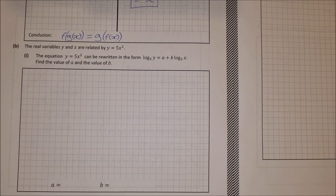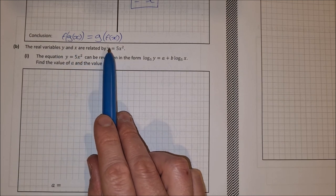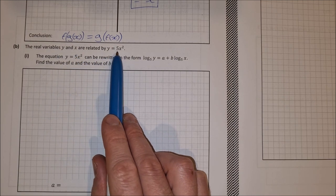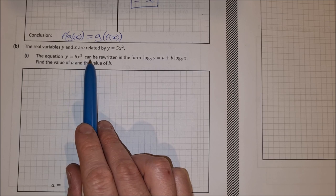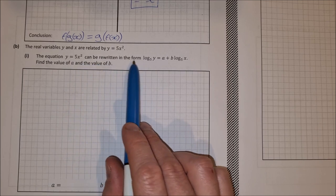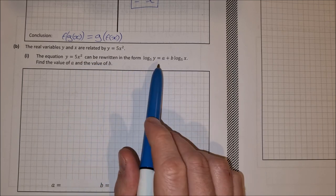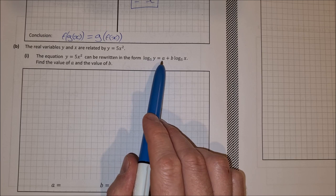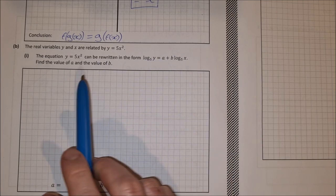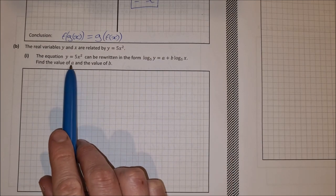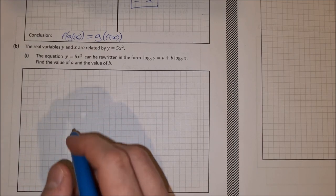Part b: the real variables y and x are related by y = 5x². The equation y = 5x² can be written in the form log base 5 of y = a + b × log base 5 of x. Find the values of a and b.